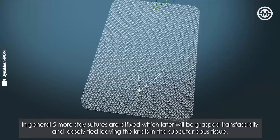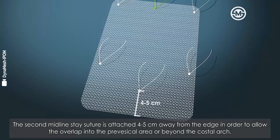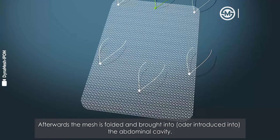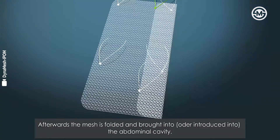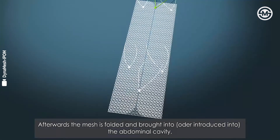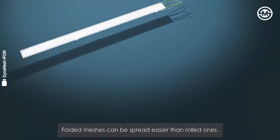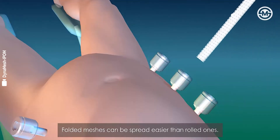In general, five more stay sutures are fixed, which will later be grasped transfascially and loosely tied, leaving the knots in the subcutaneous tissue. The second midline stay suture is attached four to five centimeters away from the edge in order to allow the overlap into the pre-vesicle area or beyond the costal arch. Afterwards, the mesh is folded and introduced into the abdominal cavity. Folded meshes can be spread easier than rolled ones.